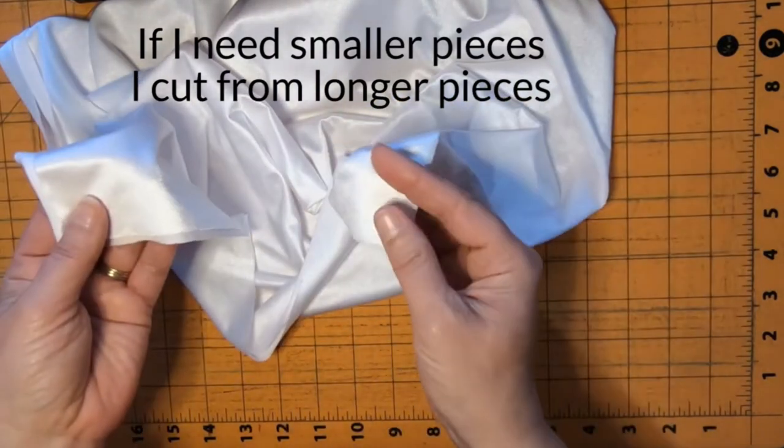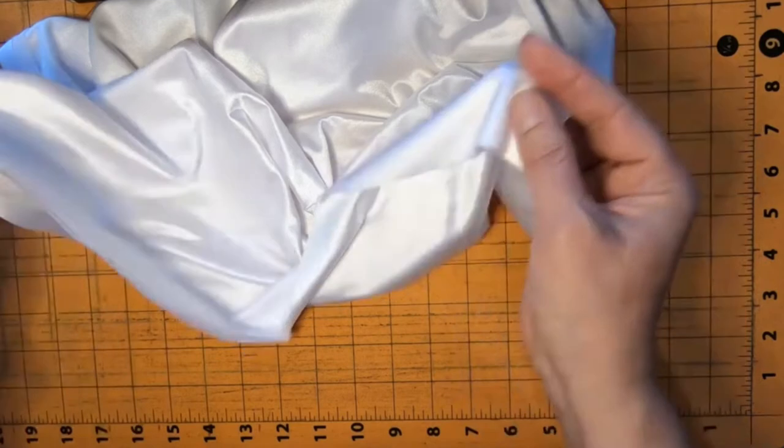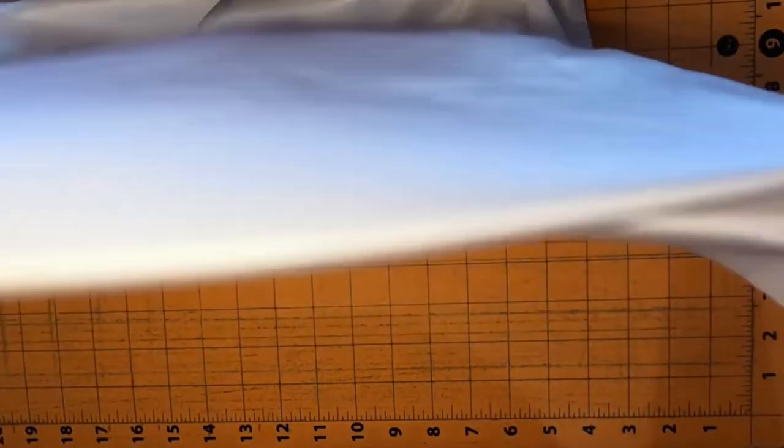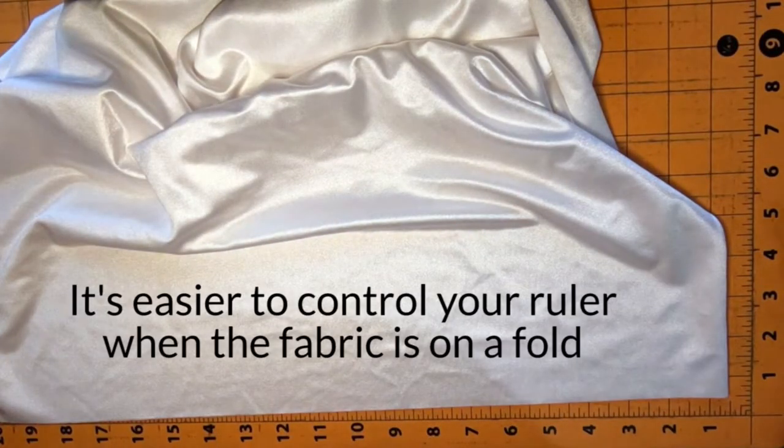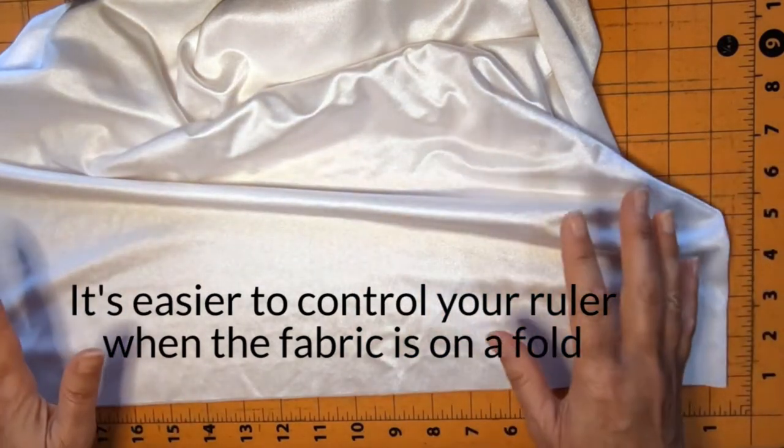I folded this in half. When I first started cutting out binding, I would cut through the entire strip and it would make it less even.